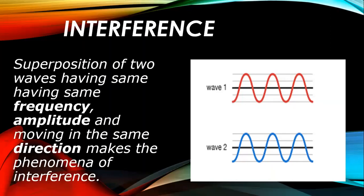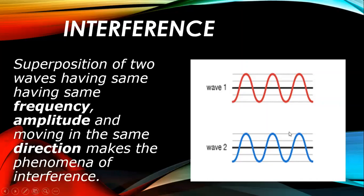The third condition is direction. Wave one and wave two must travel in the same direction. For example, if wave one travels in the right-hand direction, wave two will also travel in the right-hand direction. If wave one and wave two fulfill all three conditions, then superposition or interference will occur.